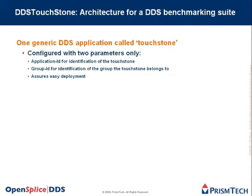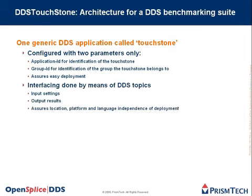Furthermore, it is configured with two parameters only, which makes it easy to deploy. These two parameters are the application ID for identification of the Touchtone instance, and an optional group ID for identification of the group the Touchtone belongs to. A group can be used for sending multicast-like commands to a Touchtone application. Interfacing to Touchtone is done by means of DDS topics — input settings and output results are both done via the regular DDS mechanism of publishing and subscribing to samples — assuring location, platform, and language independence of deployment.